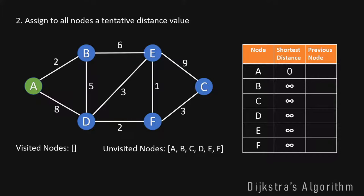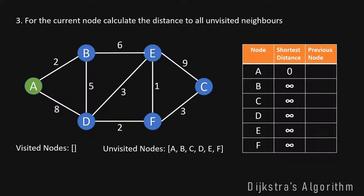Now we can start with the first iteration. Since we start at node A, we begin by calculating the distance to all unvisited neighbors of A. The distance from A to B is 2 and the distance from A to D is 8.